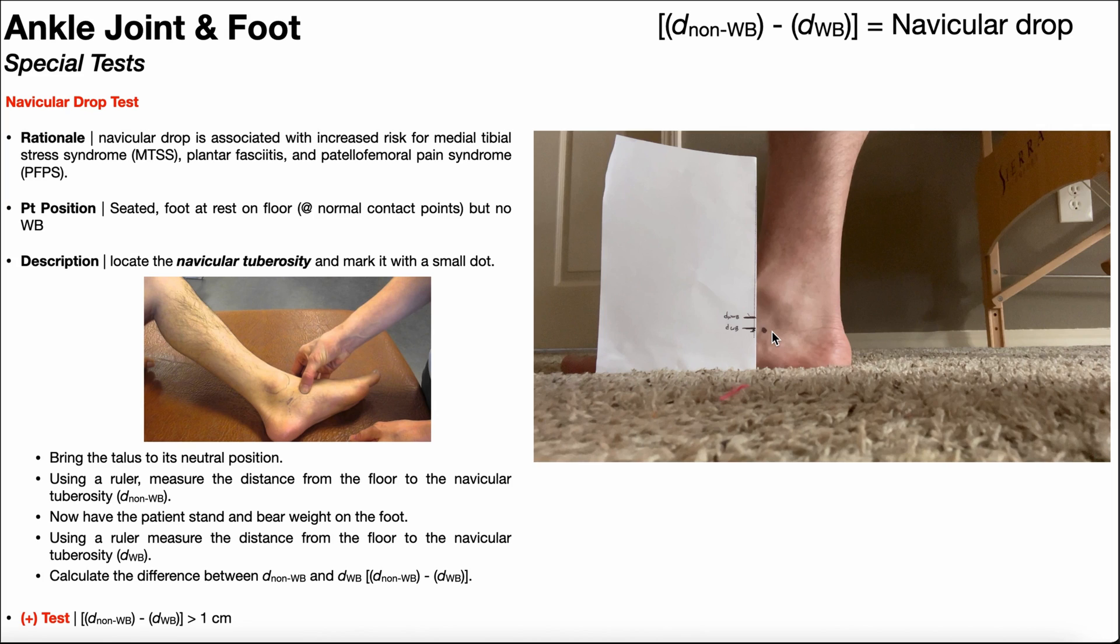So you can put the ruler against the foot right here and directly take the measurement between the floor and the navicular tuberosity. You would record that as your weight-bearing distance.